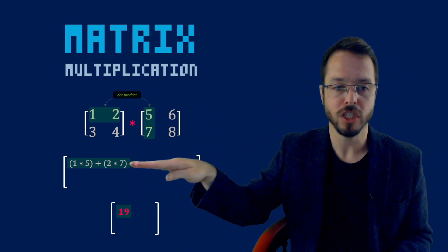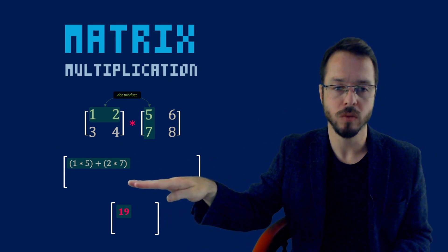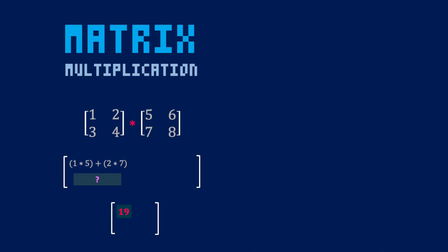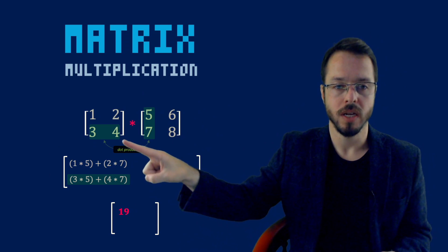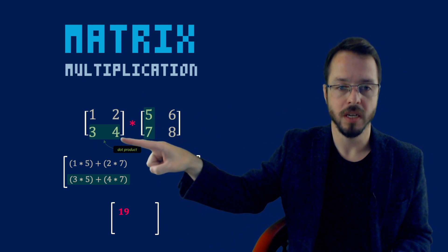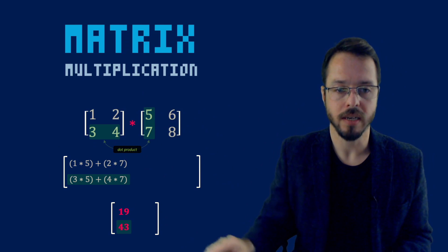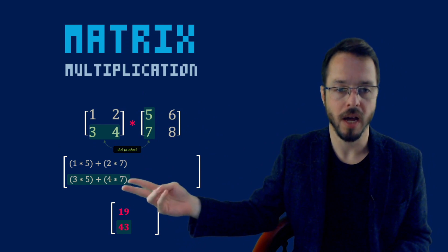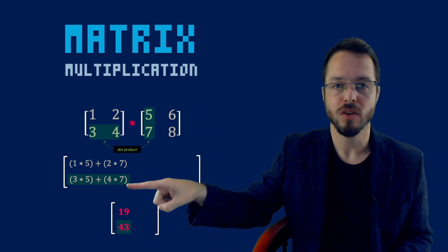So we found the first row, first column. Let's go now to the second row, first column. To find this entry, I perform the dot product between the second row and the first column: three times five plus four times seven. What do I get? 43. So 19 and 43 — 43 is the result of the second row, first column.